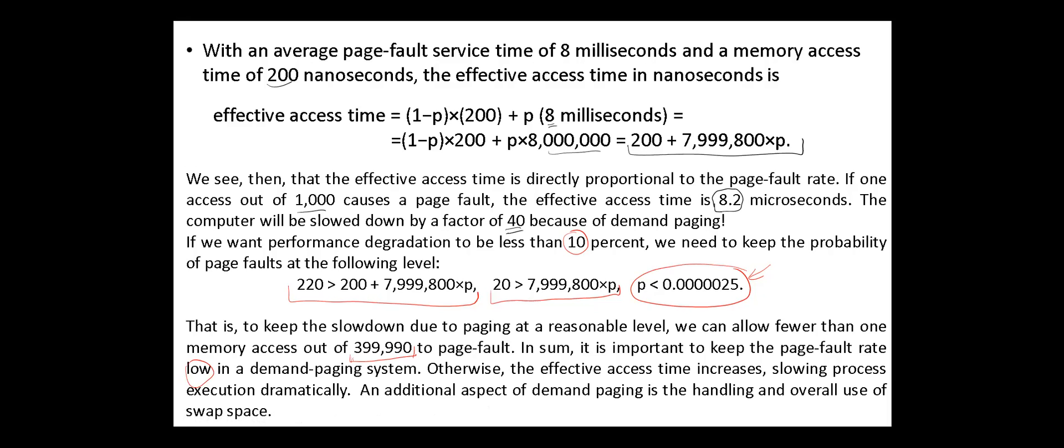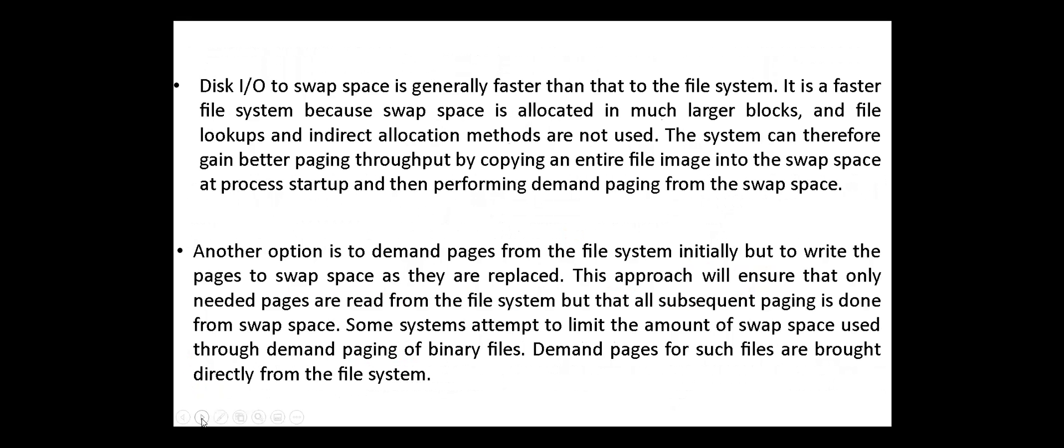An additional aspect of demand paging is the handling and overall use of swap space. Disk I/O to swap space is faster than that to the file system. It's a faster file system because swap space is allocated in much larger blocks and file lookups and indirect allocation methods are not used. The system can therefore gain better paging throughput by copying an entire file image into the swap space at process startup and then performing demand paging from the swap space.